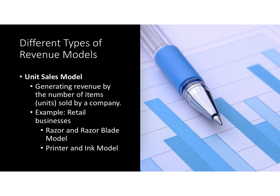Let's look at different types of revenue models. First is revenue generated by unit sales. If I'm a printer manufacturer, I'm selling printers for, say, $199 per unit. I need to sell a certain number of units per month to cover my cost, and anything above and beyond that would be additional revenue profit.